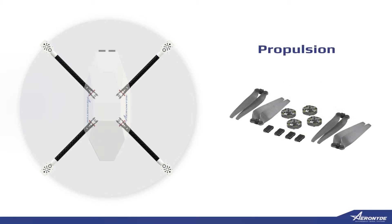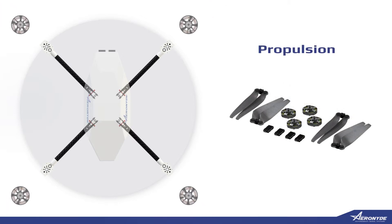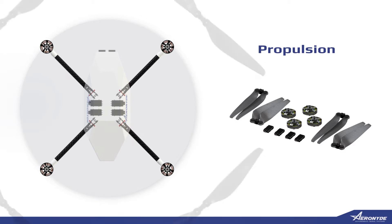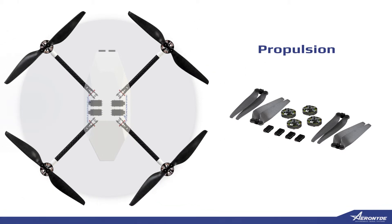The propulsion system is made of brushless motors, electronic speed controllers, and propellers. These components vary in sizes and efficiency depending on the application.